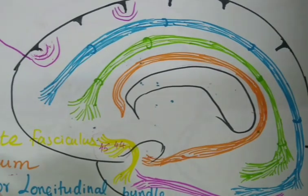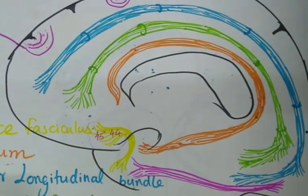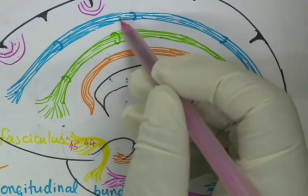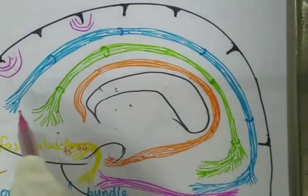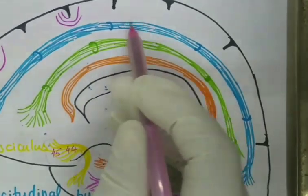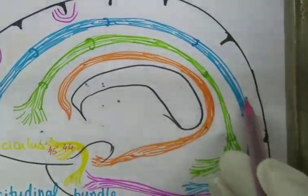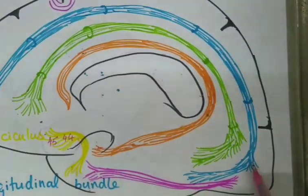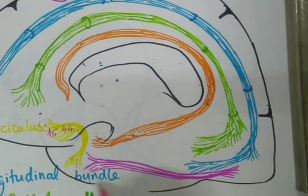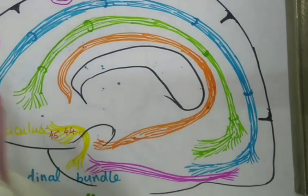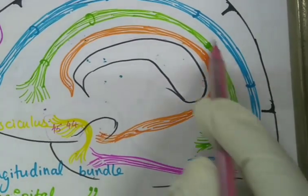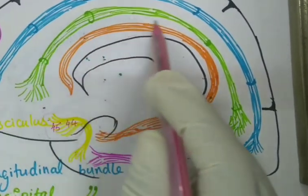The next type of long association fiber is the superior longitudinal bundle. This bundle of white fiber is present on the superior-most part of the white matter of the cerebral hemisphere. It extends from the frontal pole, travels along the parietal lobe, and reaches up to the occipital pole. Some fibers end in the occipital pole while others travel anteriorly to end in the temporal lobe, connecting the frontal lobe to the occipital and temporal lobes.